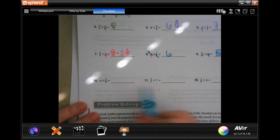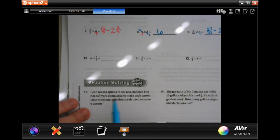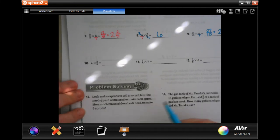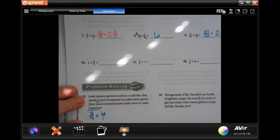I'm going to let you guys do 10, 11, and 12. We're going to go down and do 13 and 14. And look at that. Leah makes aprons, and we know it's not Miss Leah because Miss Leah can't sew. So, Leah makes aprons to sell at craft fairs. She needs 3 quarters of a yard of material to make each apron. How much material does Leah need to make 6 aprons? So, 3 quarters for each apron, and we need 6 of those. So, now I'm going to put that 6 over a 1.